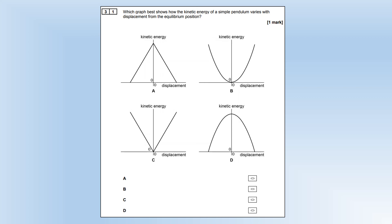Which graph shows how kinetic energy of a pendulum varies with displacement from the equilibrium position? It's maximum at the equilibrium position, so it has to be either A or D, but it's not a straight line relationship, so it's going to be D.